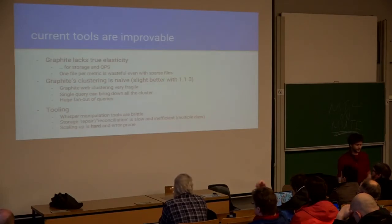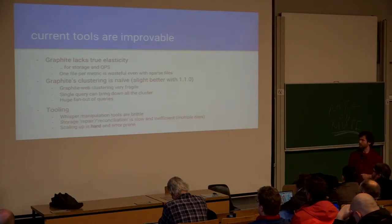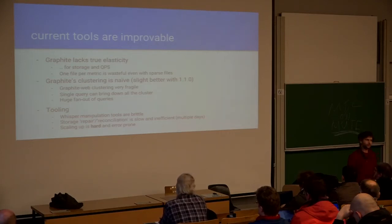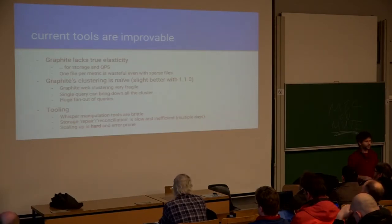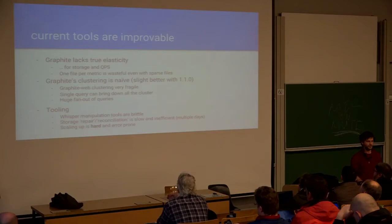What's wrong with that? That was the architecture we had a year and a half ago, but it did not work well for us. The software was working, but we were spending a lot of time trying to make it work. Since Whisper writes one file per metric, when you want to add a server you need to move files, rebalance everything — it's complicated. It used to take us one week to add one server, which is not a good use of time. The clustering was very naive: if you sharded your data across 10 nodes and one stopped answering, you'd get 500 errors for all requests. The more nodes you have, the more likely you are to have one failing.